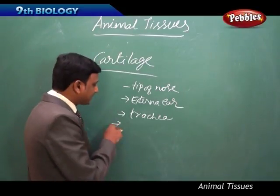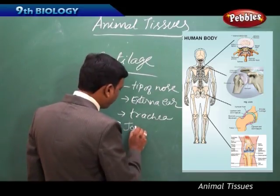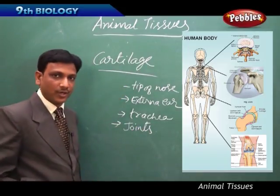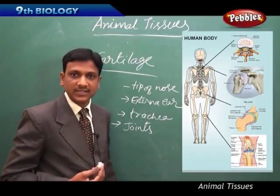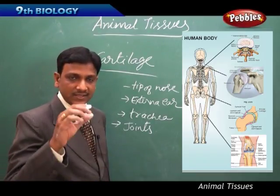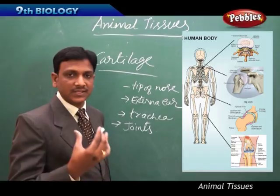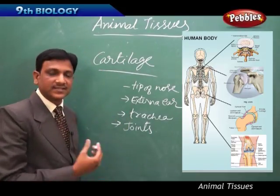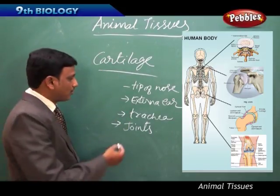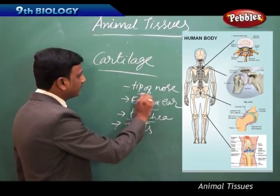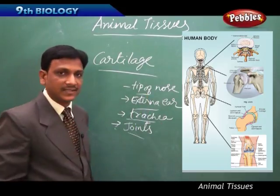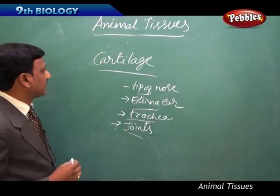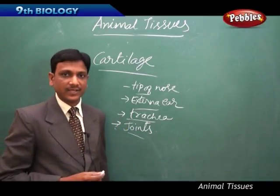Cartilage is also found in the joints of our bones. Our bones have joints — elbow joint, knee joint, hip joint. At these joints, cartilage is found and it connects different bones. That is the function of cartilage in our body. Next we go to the other connective tissues: tendons and ligaments.